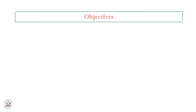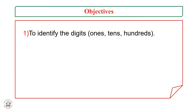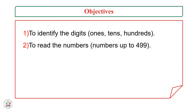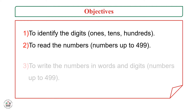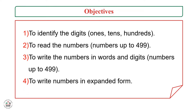Our objectives for this lesson are: the first one, to identify the digits — ones, tens, and hundreds. The second one, to read the numbers up to 499. The third one, to write the numbers in words and digits, numbers up to 499. And the last one, to write numbers in expanded form.